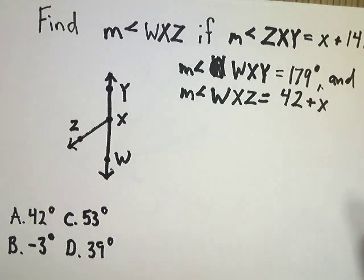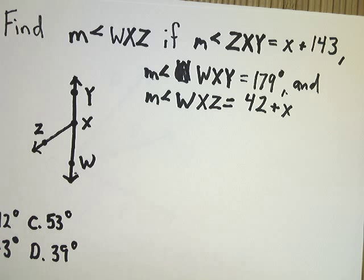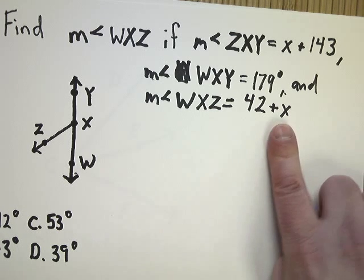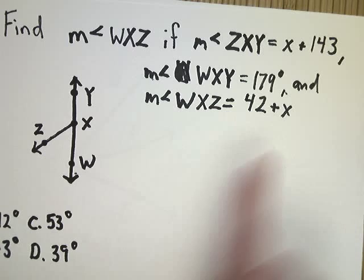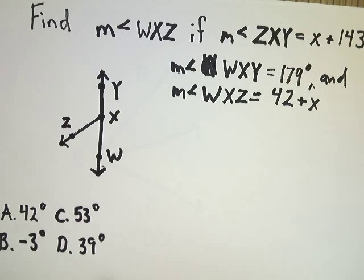So, for this one, I need to find the measurement of angle WXZ if the measurement of ZXY equals X plus 143, the measurement of WXY is equal to 179, and the measure of WXZ is equal to 42 plus X. Now, there's WXZ, so it matches here, but this isn't one of the answer choices. I can't just choose 42 plus X. That would be nice, right?